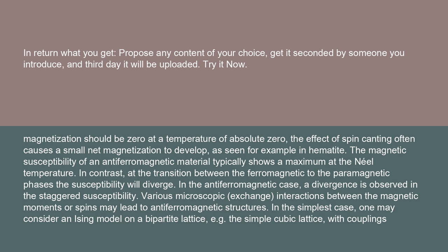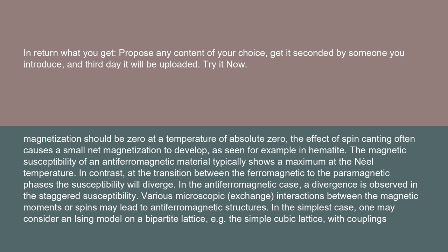Various microscopic exchange interactions between the magnetic moments or spins may lead to antiferromagnetic structures. In the simplest case, one may consider an Ising model on a bipartite lattice, e.g. the simple cubic lattice, with couplings between spins at nearest neighbor sites. Depending on the sign of that interaction, ferromagnetic or antiferromagnetic order will result.